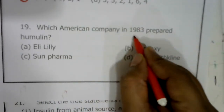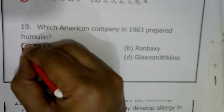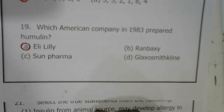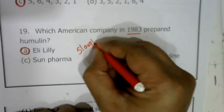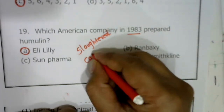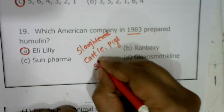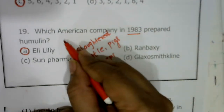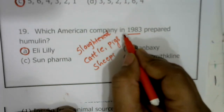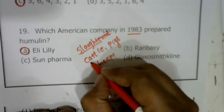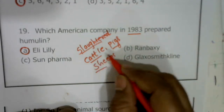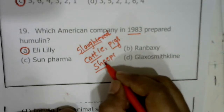Question nineteen: which American company prepared Humulin in 1983? The correct answer is Eli Lilly. Eli Lilly is the first American company to produce human insulin in the year 1983. Before 1983, insulin was extracted from slaughtered cattle, pigs, and sheep. However, insulin from animal sources caused allergy in some patients because it was not of human origin.